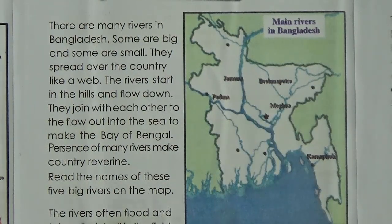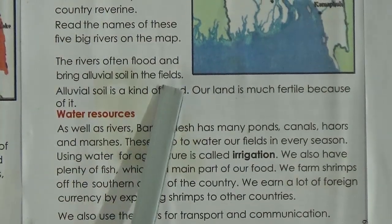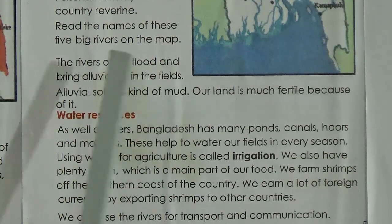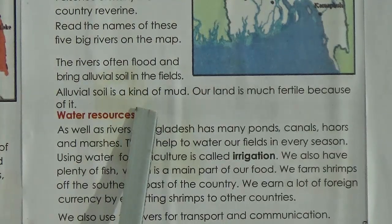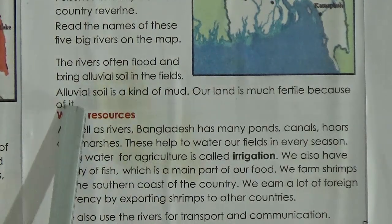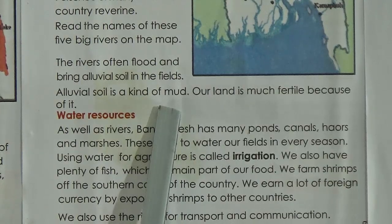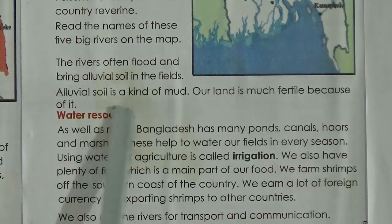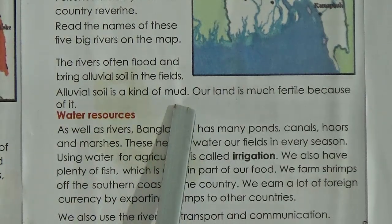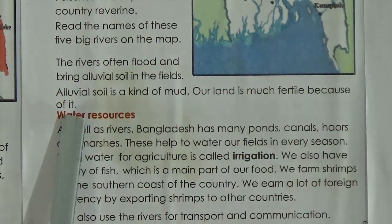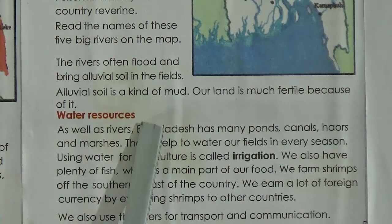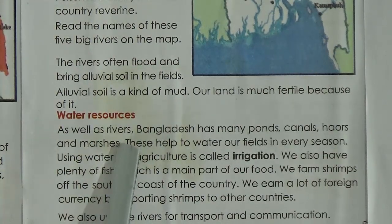The rivers often flood and bring alluvial soil to the fields. Alluvial soil is a kind of mud, and our land is very fertile because of it.